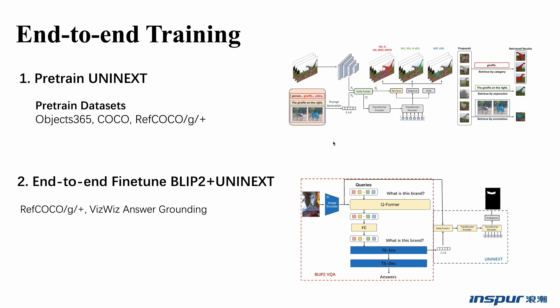In the second stage, we trained our end-to-end answer grounding model. We employed the pre-trained UniInex model weights on the Objects365 dataset as the initial weights for the UniInex model part, and used the fine-tuned BLIP2 VQA model weights as the answer generation model part. We replaced the output from the UniInex prompt generation module with the BLIP2 T5 encoder output. Finally, we trained the whole model on the RefCOCO series datasets and the VizWiz answer grounding datasets.